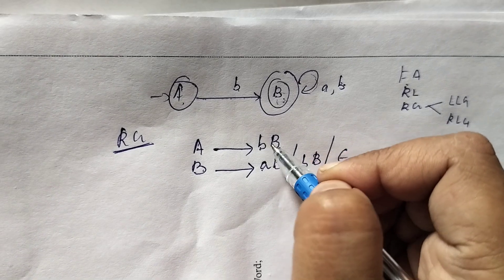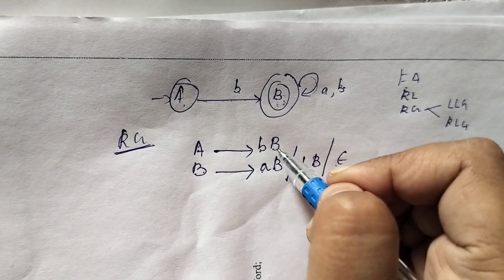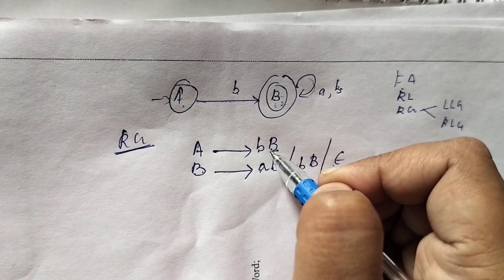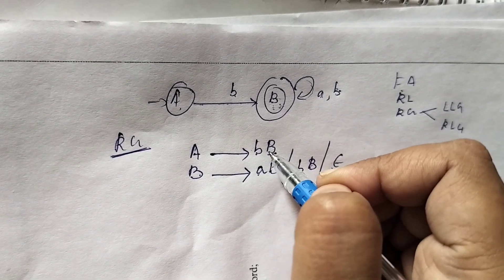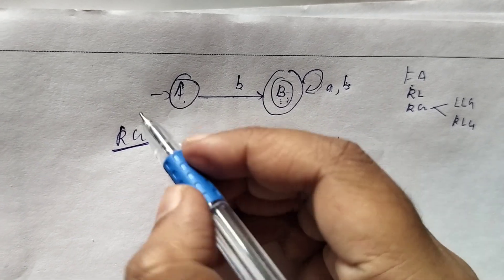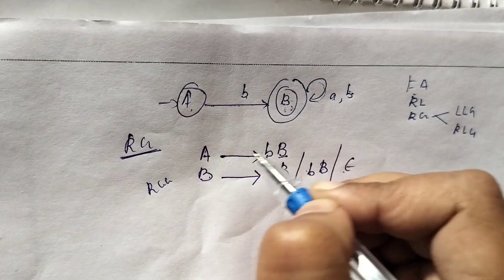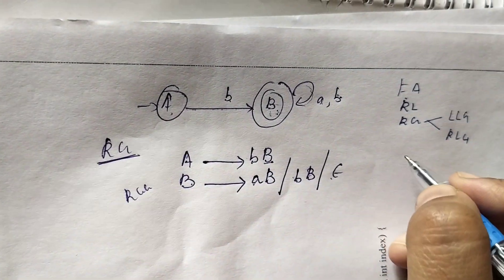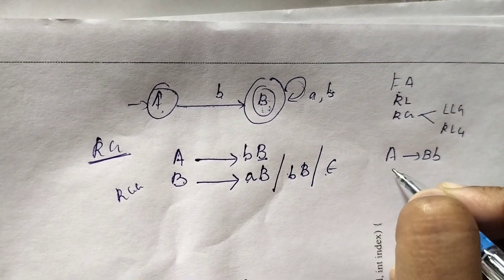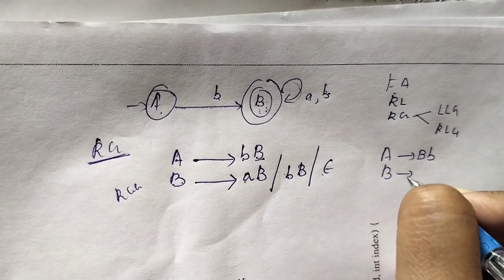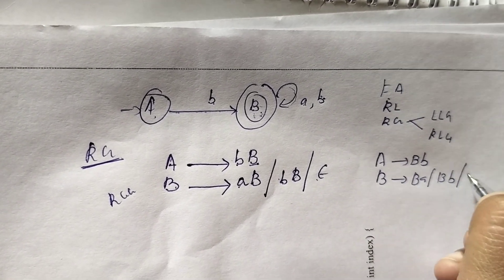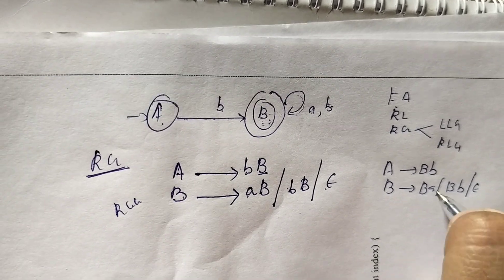This is a right linear grammar because in the RHS part the non-terminal is on the right side. If it were a left linear grammar, it would be written as: A → Bb, B → Ba or Bb or ε.